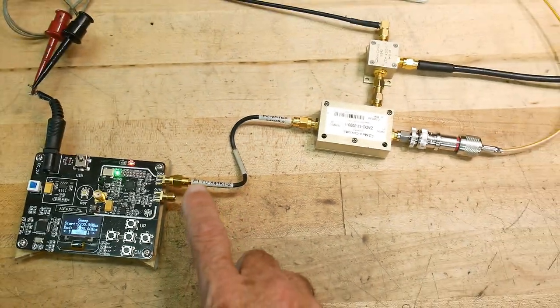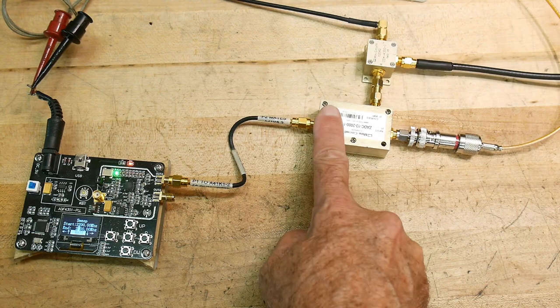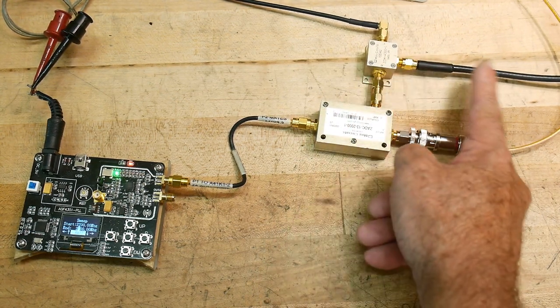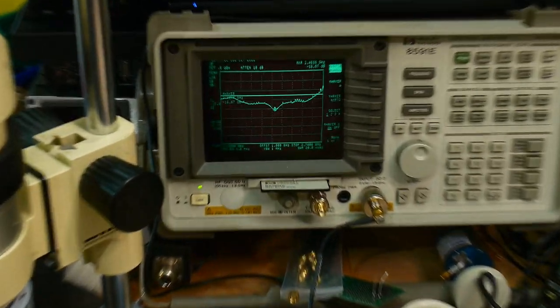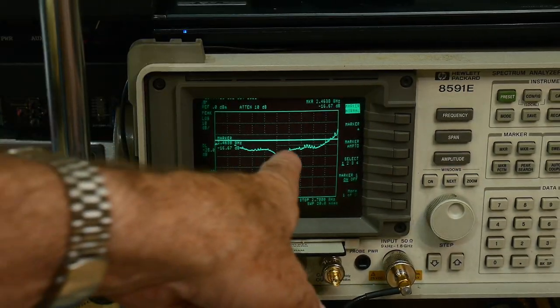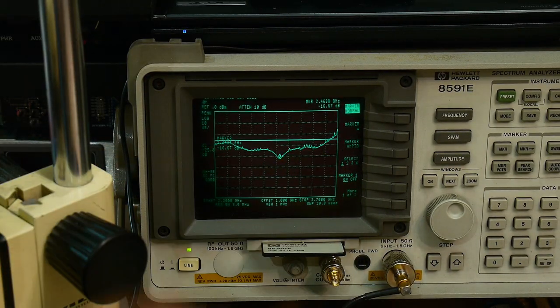So here we are, here's my sweeper, and here's my coupler, and here's my 1 GHz coming in and my down sampling, and then it will go over to the spectrum analyzer.